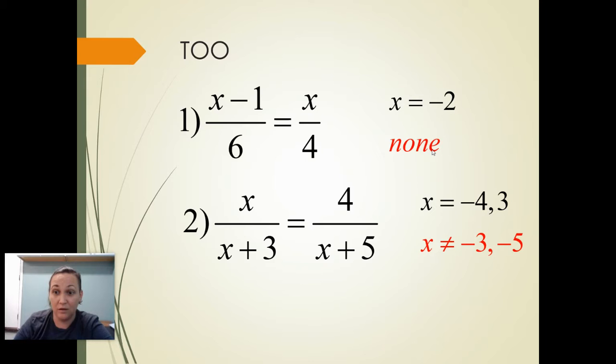And I just want to point out we almost had an extraneous solution. X cannot equal negative three. But luckily, we got positive three. So we're good. We're fine. Negative four and positive three are my final answers.